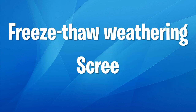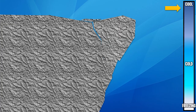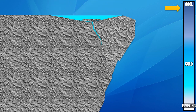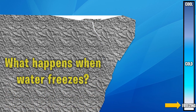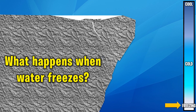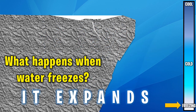That's why we need freeze-thaw weathering and something called scree. To understand freeze-thaw weathering, we first need to recognize that sometimes there are cracks found in the tops of cliffs. As it begins to rain, these cracks will fill with water. Ordinarily there's nothing to worry about, but as the temperature changes and we enter winter, that water goes from cool to cold to freezing. So the question is: what happens when water freezes? Well, it expands, and that creates a lot of problems.